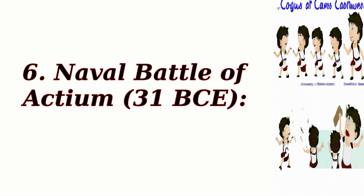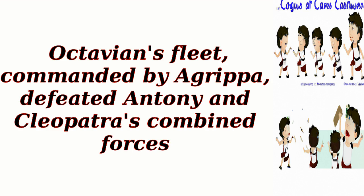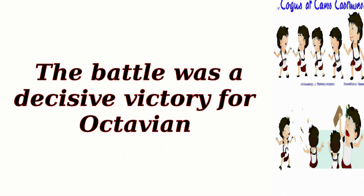6. Naval Battle of Actium, 31 BCE. The final clash between Octavian and Antony occurred at the Battle of Actium, off the coast of Greece. Octavian's fleet, commanded by Agrippa, defeated Antony and Cleopatra's combined forces. The battle was a decisive victory for Octavian.